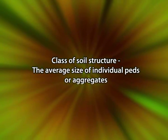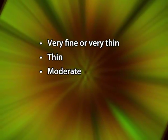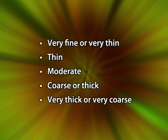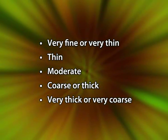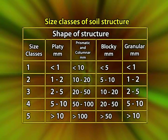Another important aspect of soil structure is the classes of soil structure. Class of structure refers to the average size of individual aggregates. There are five classes of structure encompassing all types: very fine or very thin, thin, moderate, coarse or thick, and very thick or very coarse. The size range of different classes for different structures can be seen in the table.